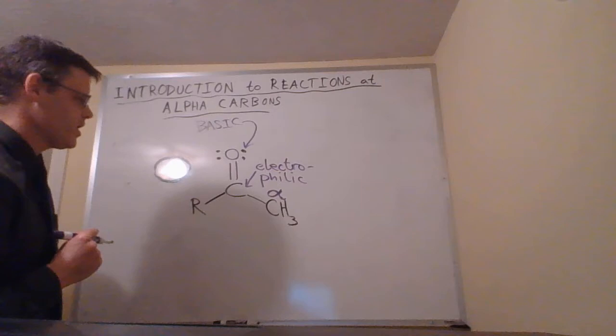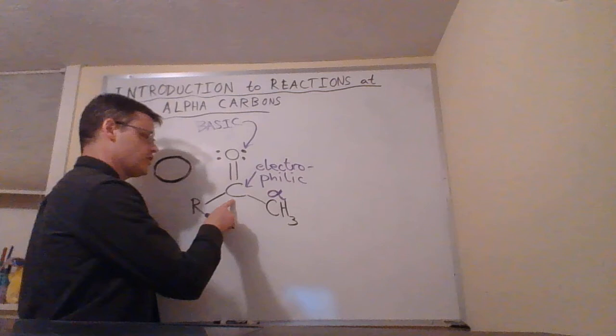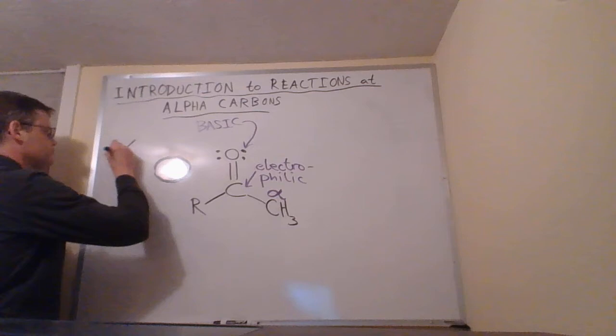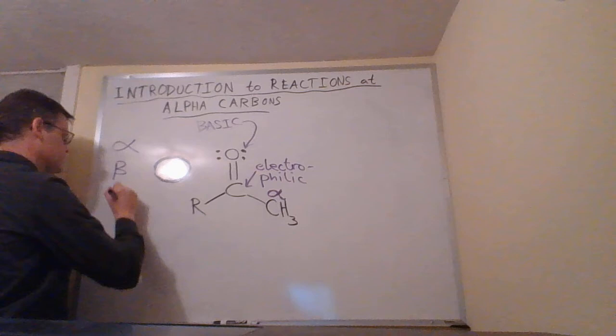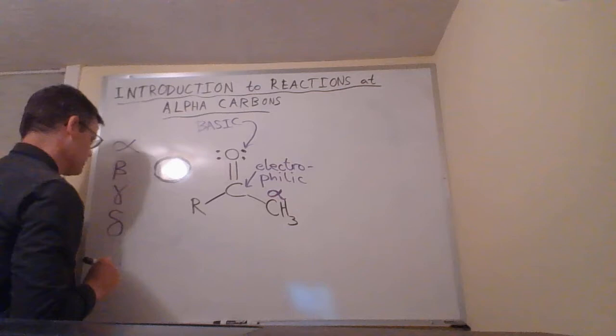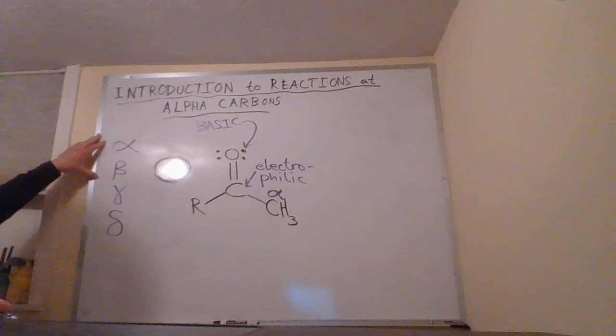We're going to see a lot of Greek letters in this chapter. The first is alpha. If you imagine we had a long carbon chain going on here, this would be the carbonyl carbon, and then going out from that we would just go through the Greek alphabet. First the alpha carbon, the next one would be the beta carbon, then we can have a gamma carbon, and if we keep going further we could get to delta.